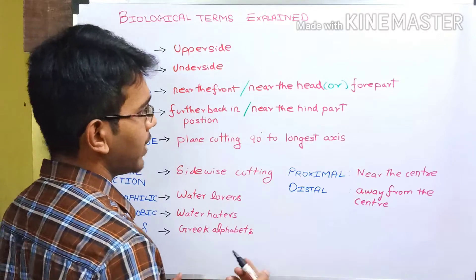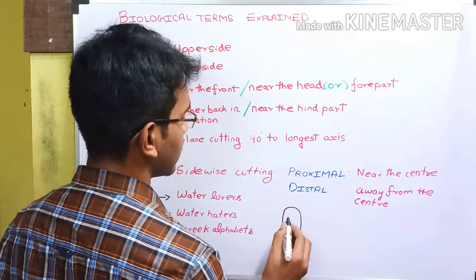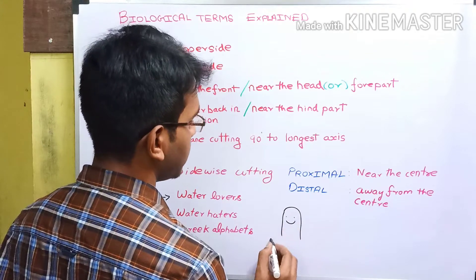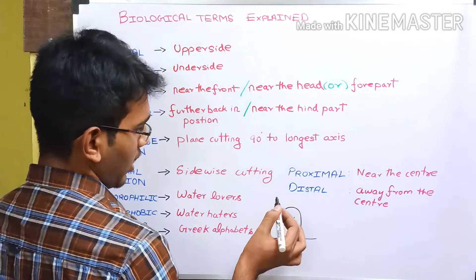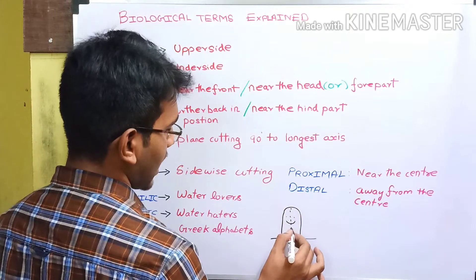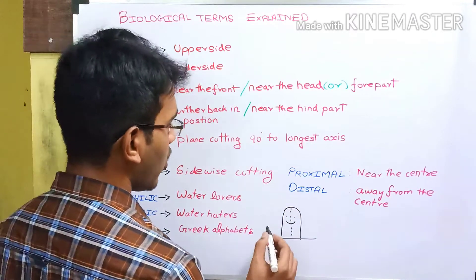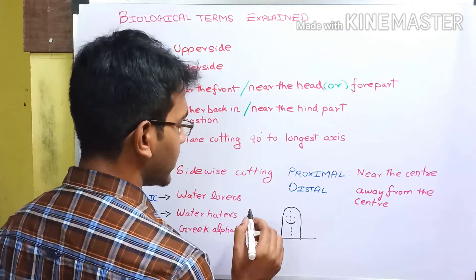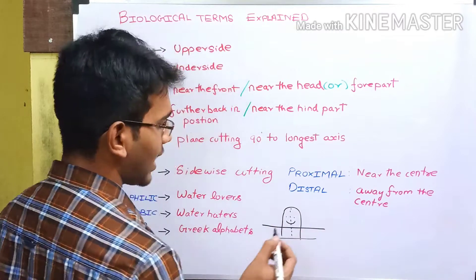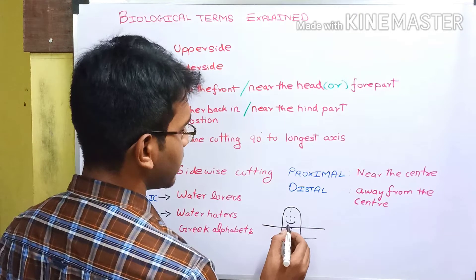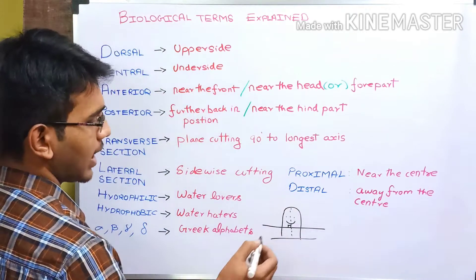Consider a hypothetical organism. This is its longest axis. When we cut this organism with a plane transversely, that plane makes 90 degrees with the longest axis. This cut is called the transverse section.